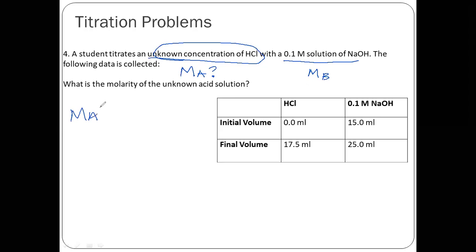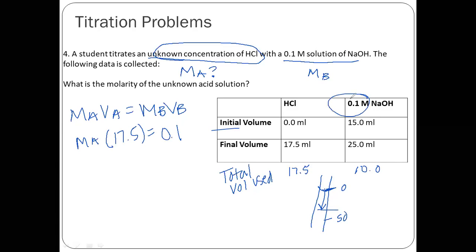So what is the similarity of the unknown acid solution? So one thing I want you guys to look at is they give you an initial volume and a final volume for both the acid and the NaOH. So you really need to find the total volume that was used. So when they look at the burette, it starts at zero and it goes down to 50. So that's why it's saying that the initial volume is zero and then gets bigger. So basically you're just going to subtract final minus initial and you get 17.5 and do the same thing for this one, 10.0, and then plug in what you know. So we don't know MA. VA is 17.5. MB is 0.1 right here. And VB is 10. And so when you solve for that, you get X equals 0.06 molar.